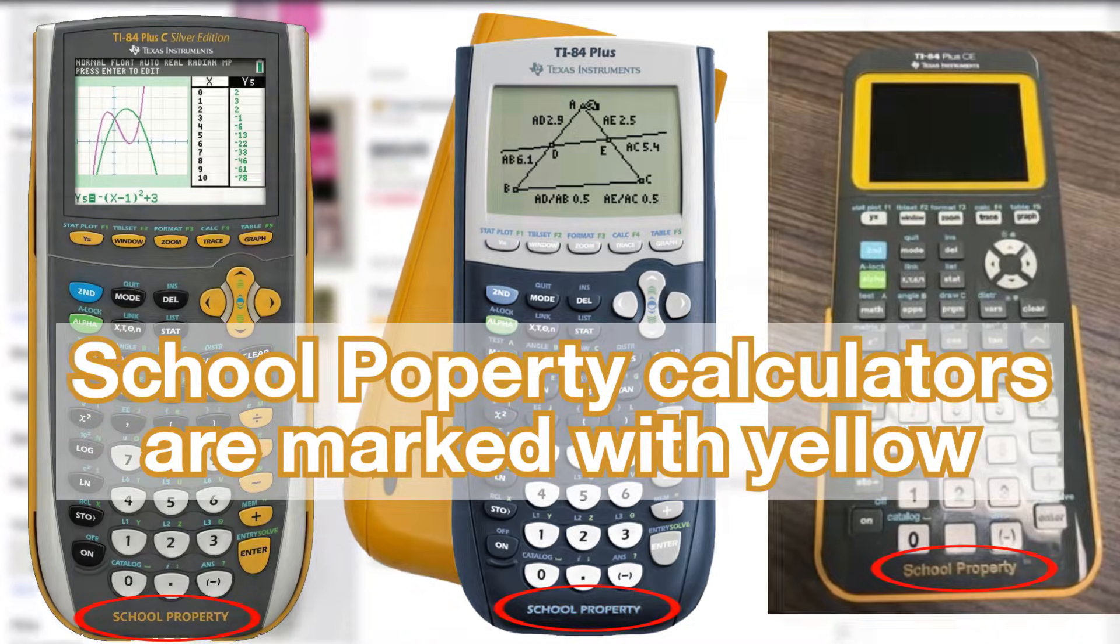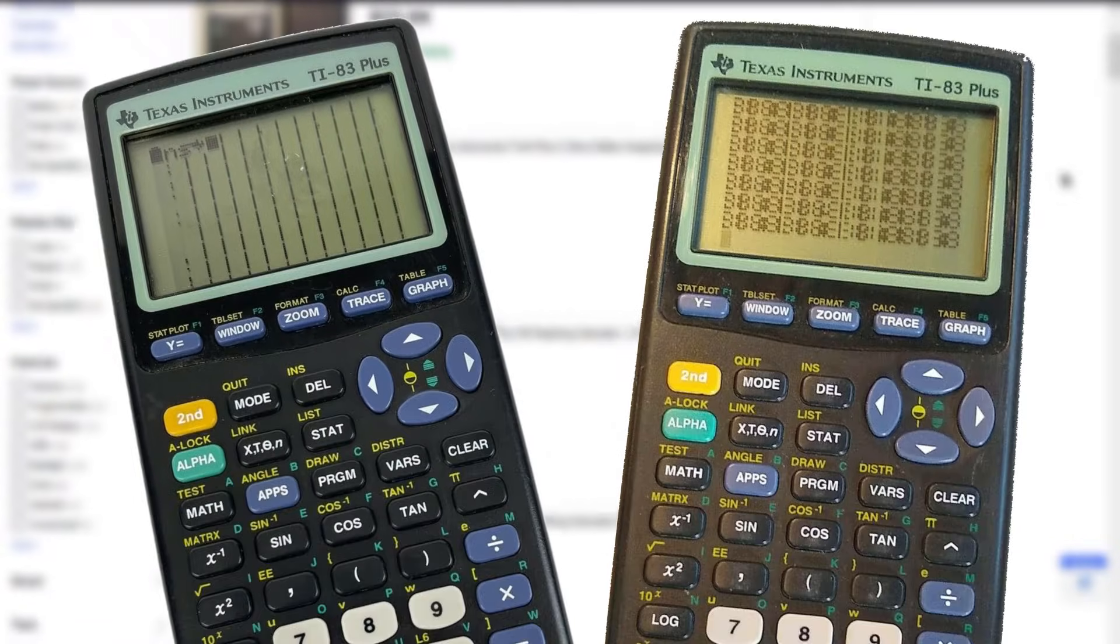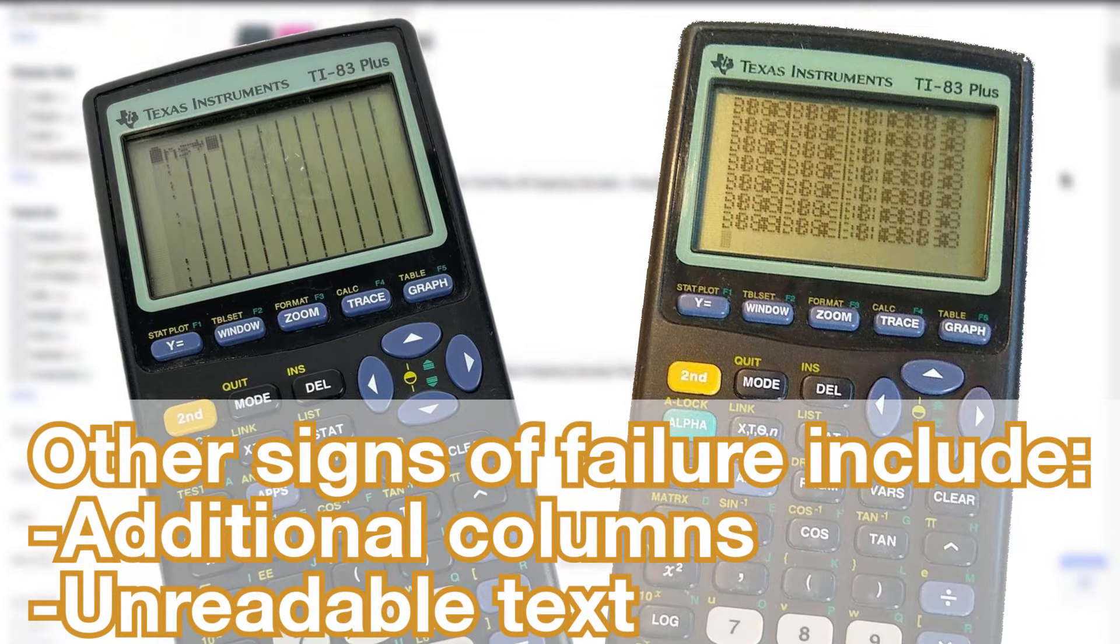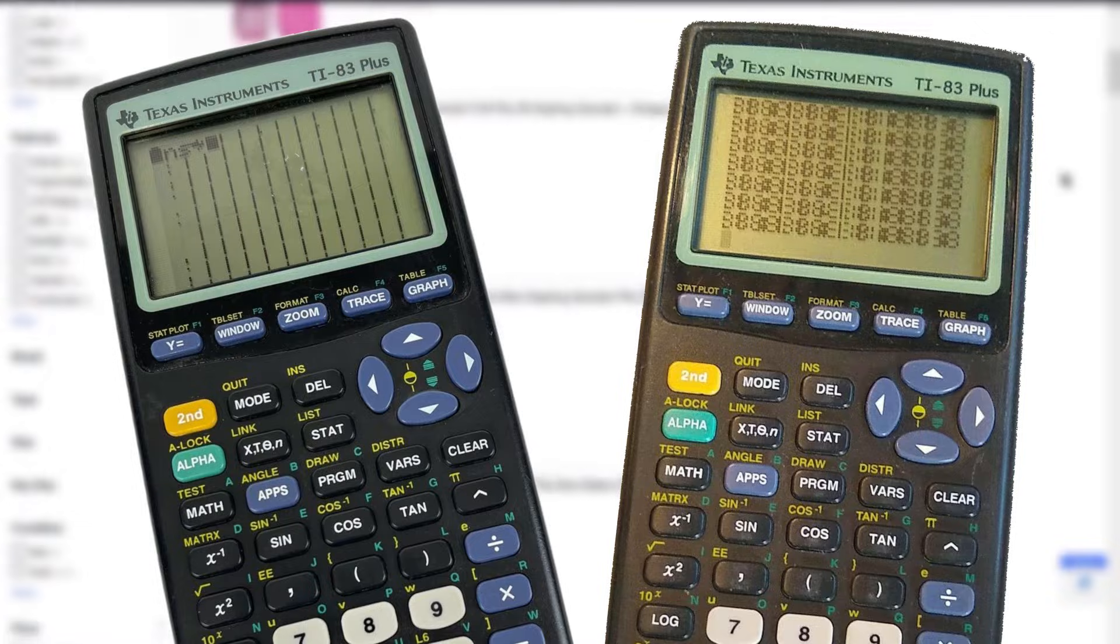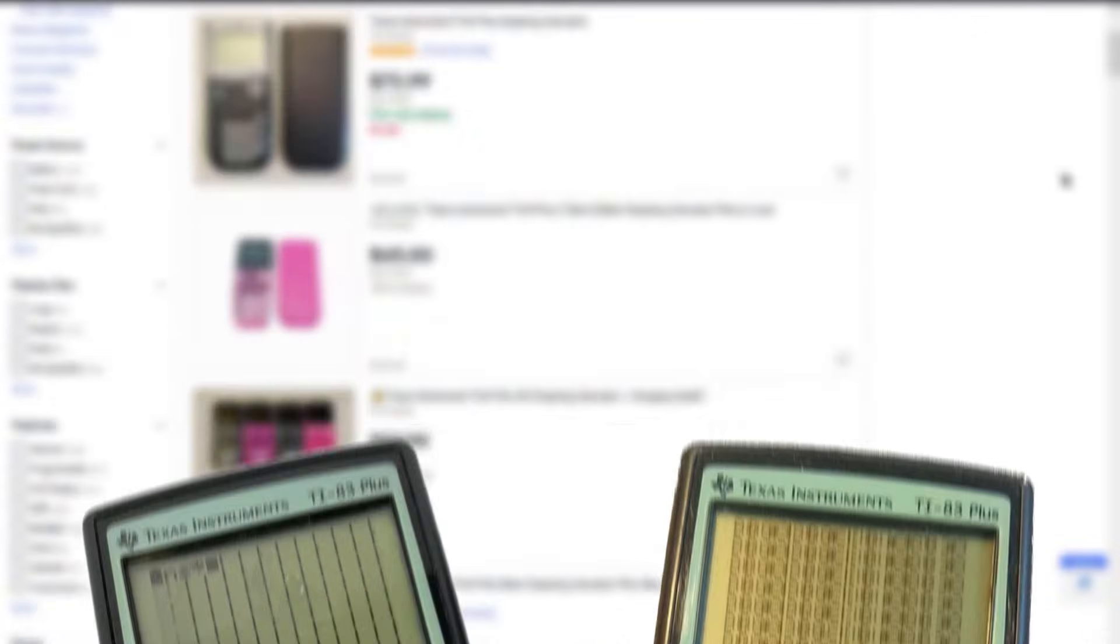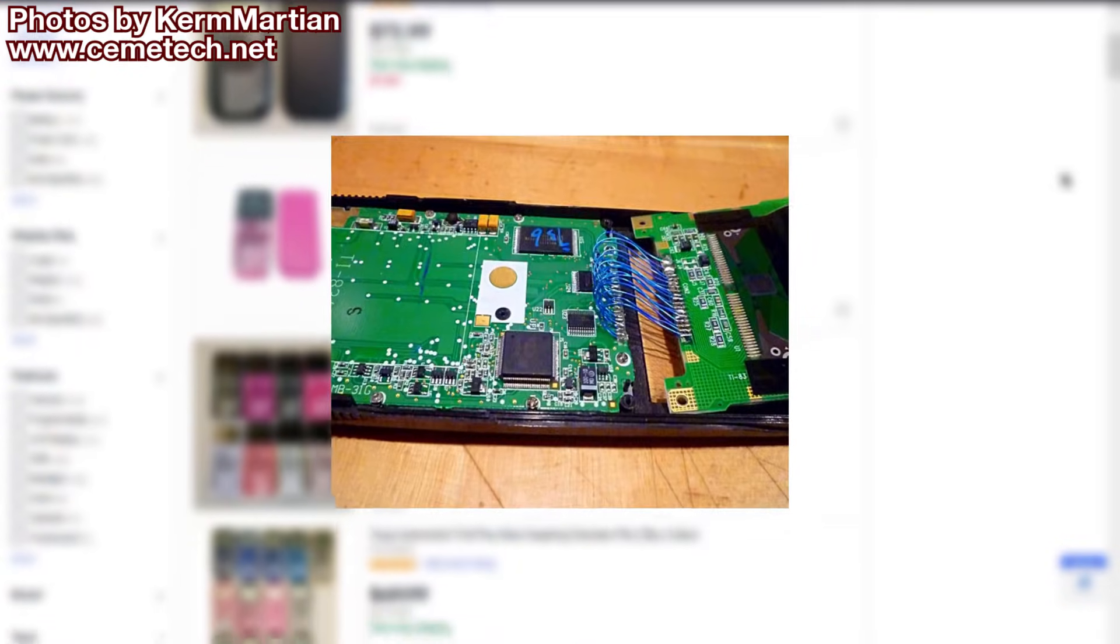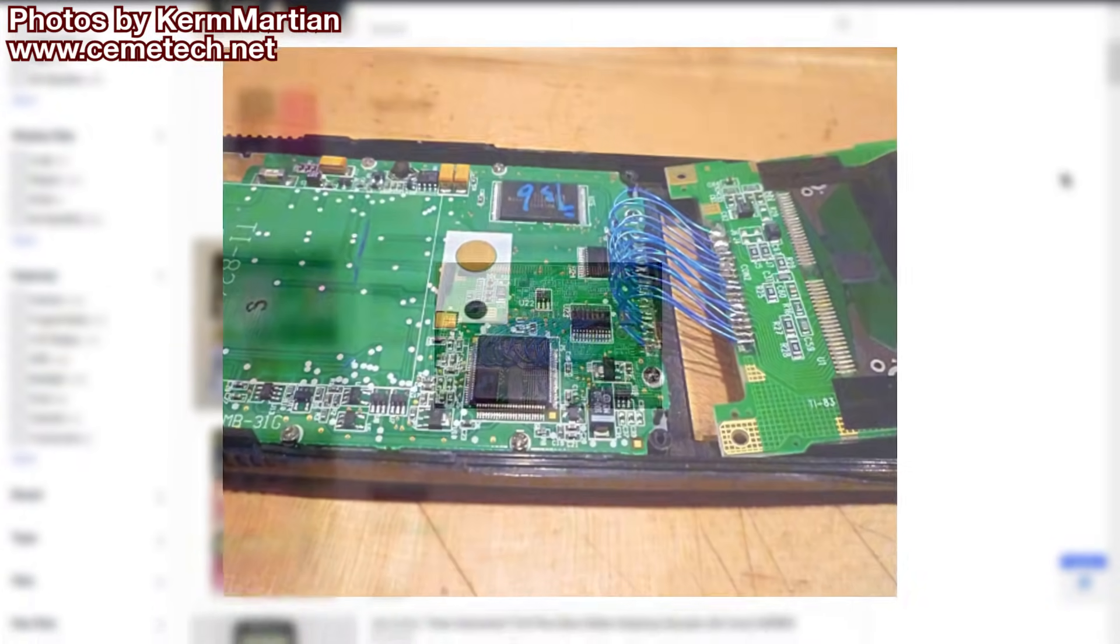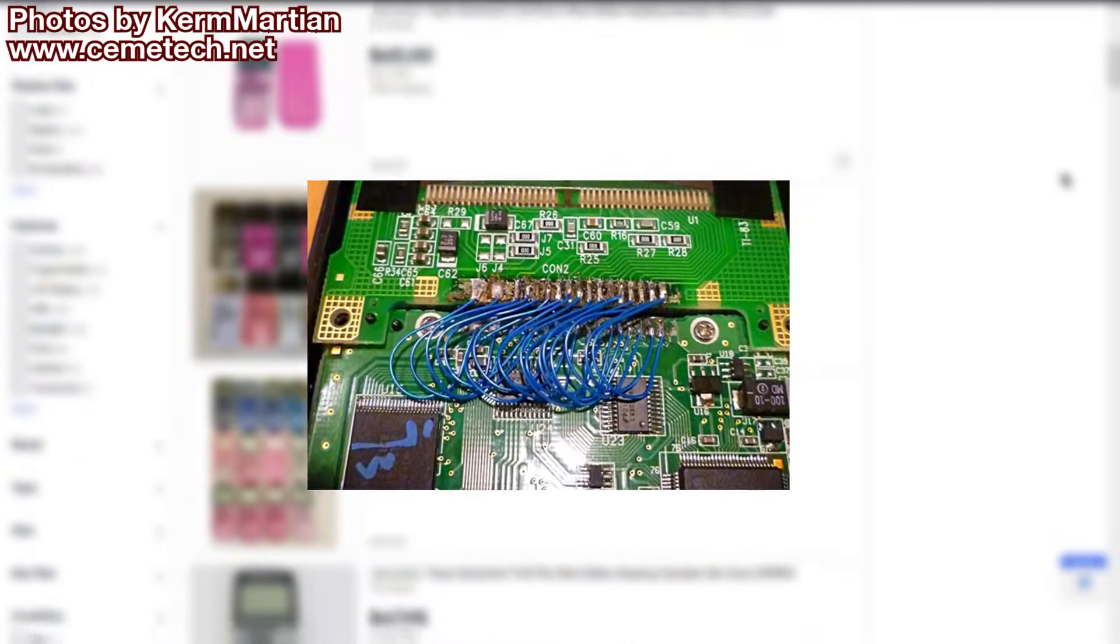Second, if buying a calculator used, be sure the calculator doesn't have missing columns on the screen. This is a sign of screen ribbon cable failure, which is very common on calculators with monochrome screens and are older than 15 years. Unfortunately, even though it's a common issue, it's impossible to fix without soldering skills. Ribbon cable failure only gets worse, so avoid calculators with these broken screens.